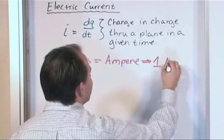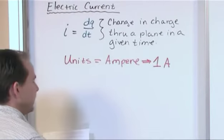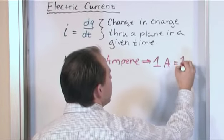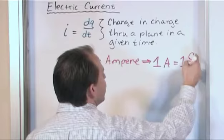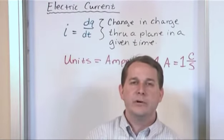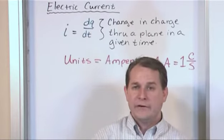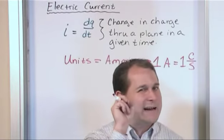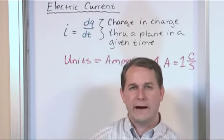One ampere, which is A, one amp is usually how you say it, is just equal to one coulomb per second. What do you think coulomb is? Remember that? We've been talking about coulombs forever. Coulomb is just a unit of charge. So you have an electron, it has a teeny tiny amount of coulombs associated with it.